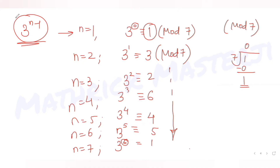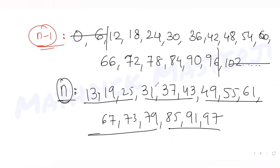So I wrote all multiples of 6 starting from 0, kept only those where n falls between 10 and 100, added 1 to get values of n, and got 15 terms in my list. That matches option C, so C is the correct answer. I hope you have understood this fully.